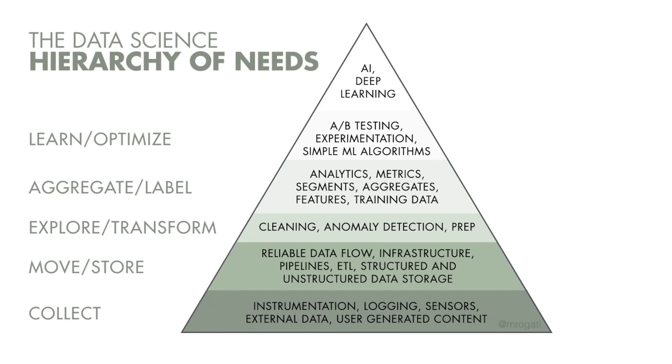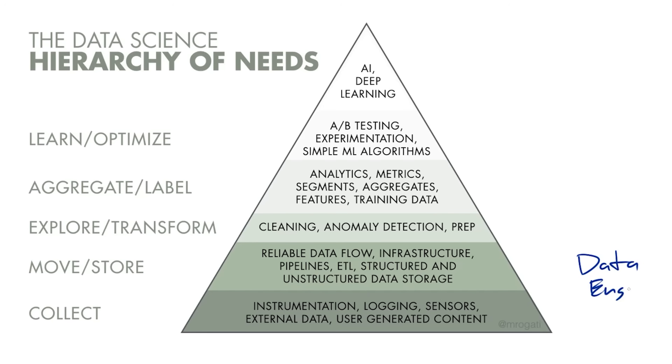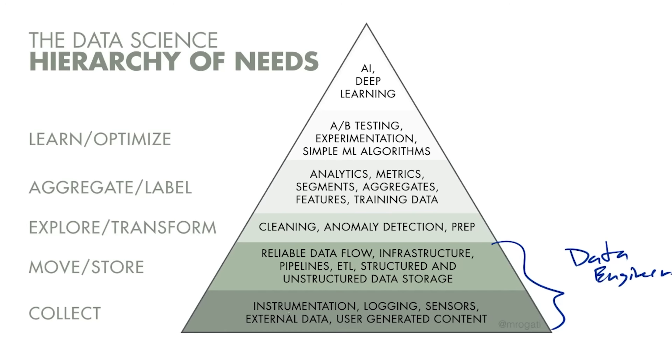Now let's look at this with a bird's eye view — where do data scientists, data engineers, and data analysts fit in? Commonly, data engineers would be working on the explore, transform, move, store, and collect areas. Software engineers mostly do the collect part since it's usually implemented on the front end and a bit of the back end, because that's where you collect the user data.